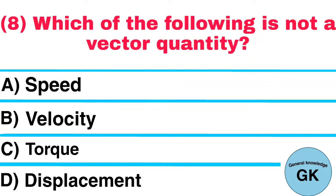Question number 8. Which of the following is not a vector quantity? A. Speed, B. Velocity, C. Top, D. Displacement. Answer: Speed.